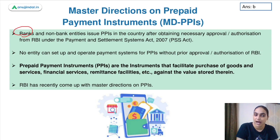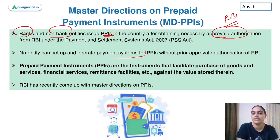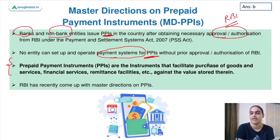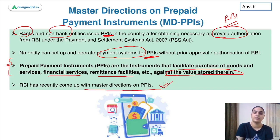RBI says that banks as well as non-bank entities, if they want to issue prepaid payment instruments, need the approval or authorization from RBI. Without approval from RBI, no entity can issue prepaid payment instruments. If you want to be a prepaid payment instrument issuer, you need permission from RBI. This definition — instruments facilitating purchase of goods and services including financial services and remittance facilities against value stored therein — was discussed in question one.